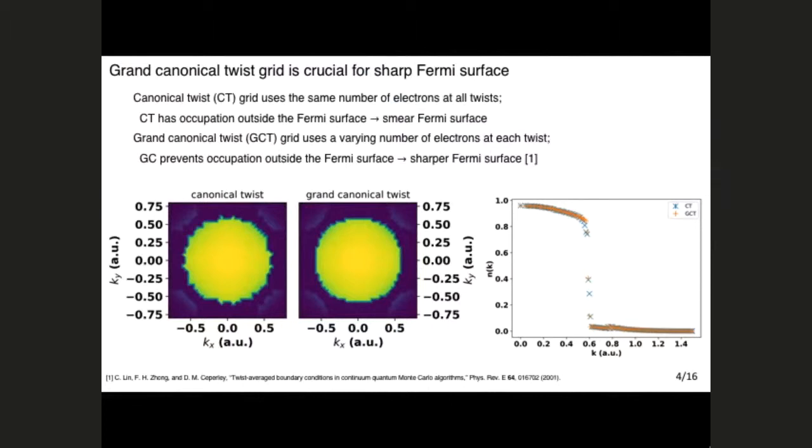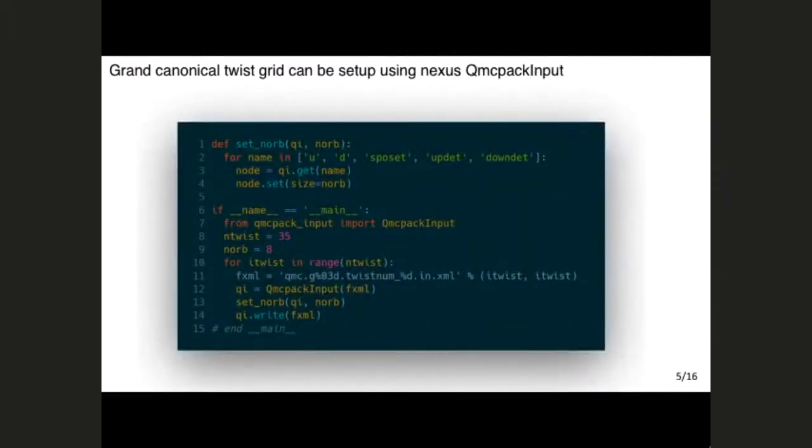So this is not currently built into Nexus, but it's not very difficult to achieve. Just using the QMCPACK input object from Nexus. So what I do is I run Nexus with skip submit, and then it generates the input file. Then you just loop through it, and then read your input file into a QMCPACK input object. Then it's easy to edit this object to change the number of electrons in the simulation, and then you just run it.